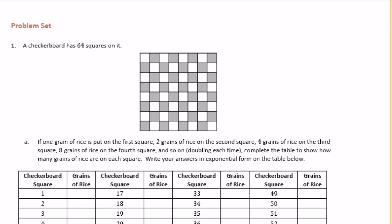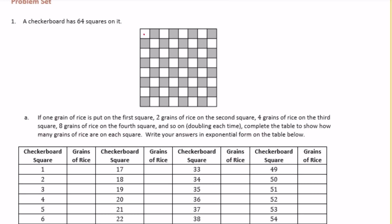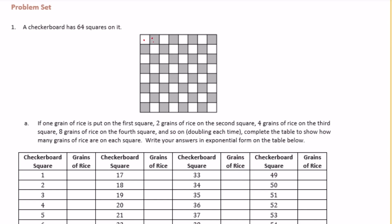6th grade module 4 lesson 22 problem set number one. A checkerboard has 64 squares. They've given us an image of the checkerboard. If one grain of rice is put in the first square, two grains of rice on the second square, four grains on the third square, eight grains on the fourth square, and so on, doubling each time. Complete the table to show how many grains of rice are on each square, writing answers in exponential form.